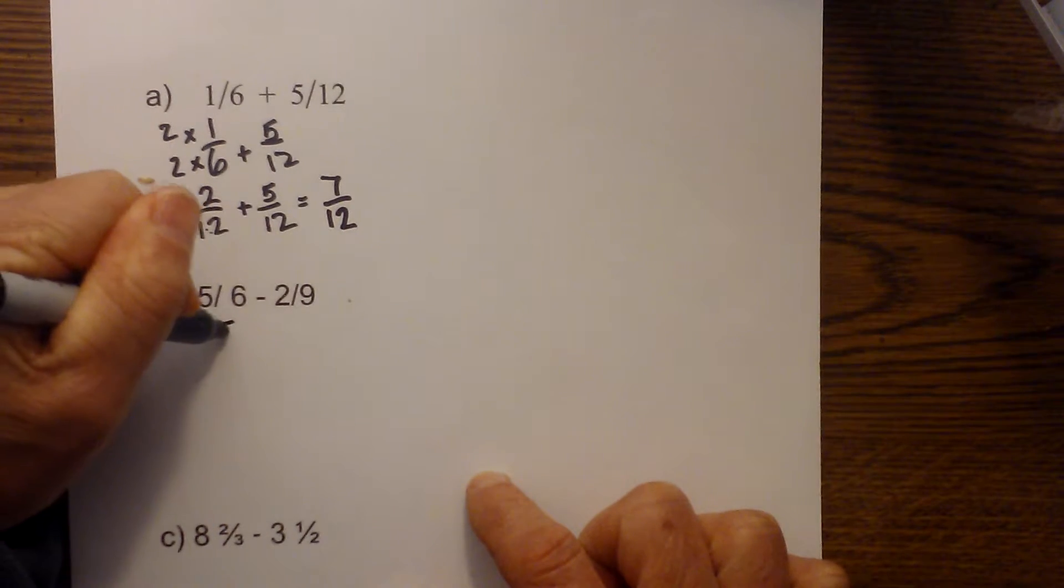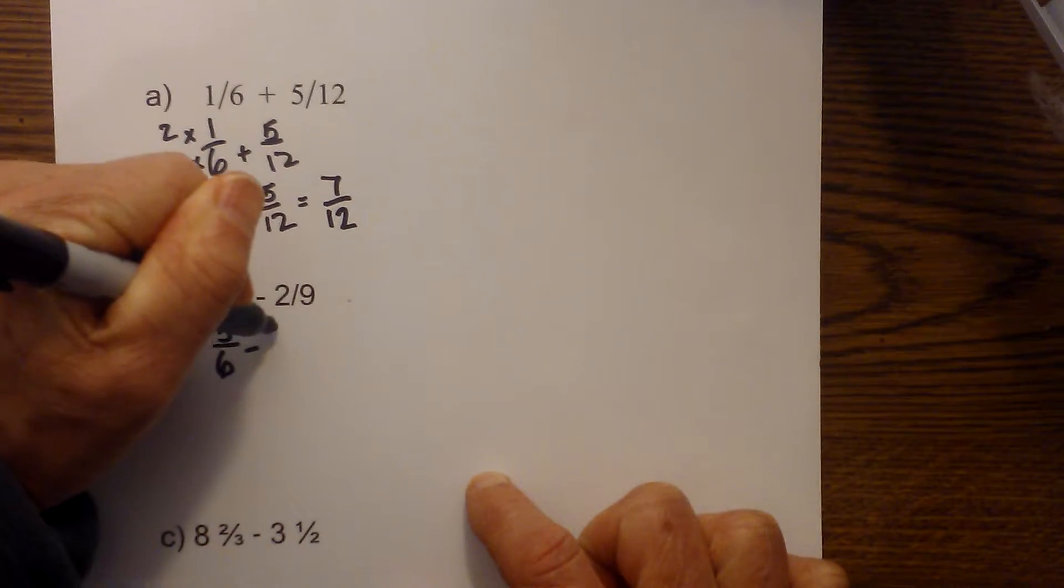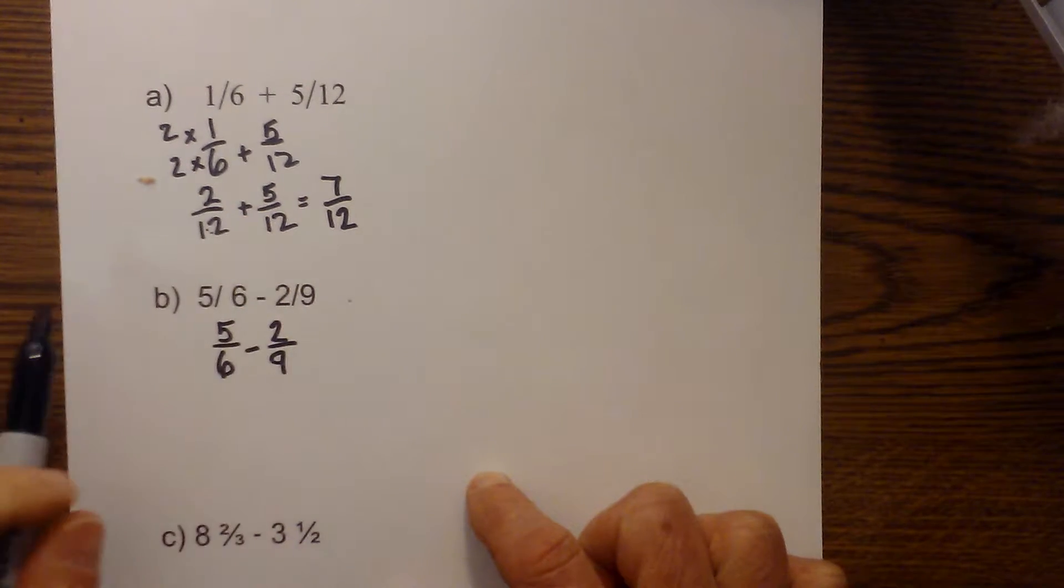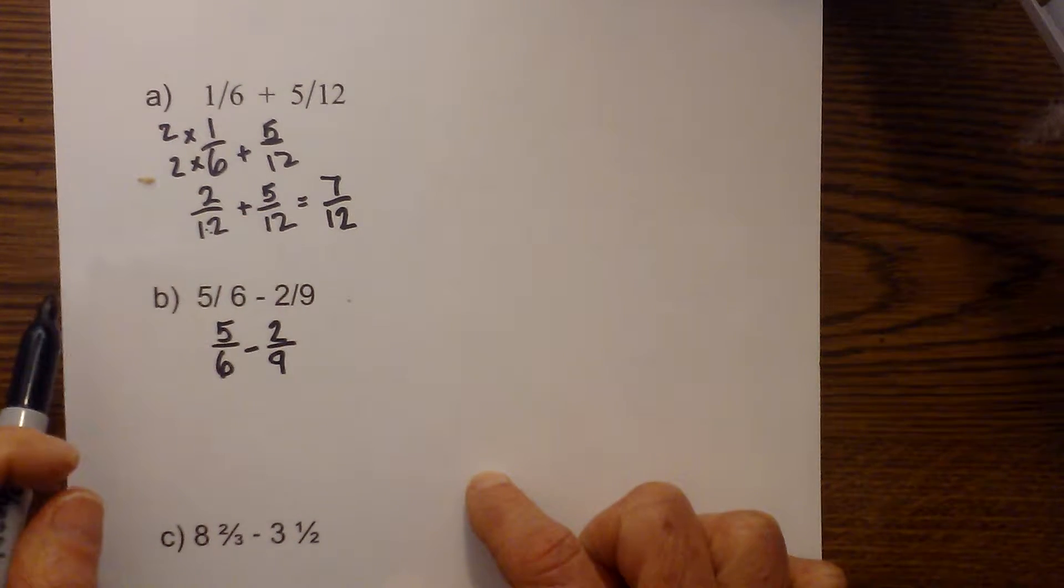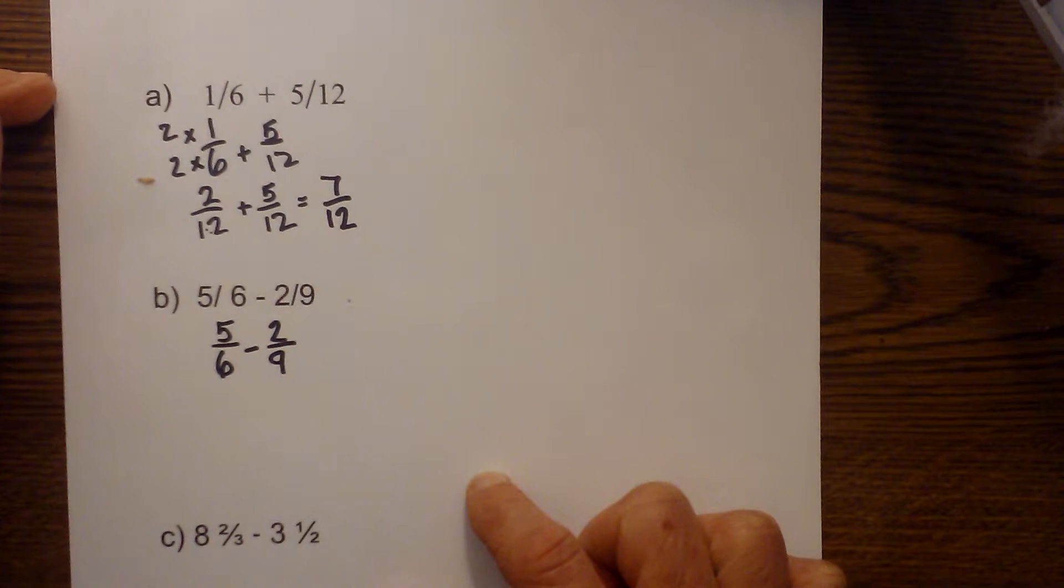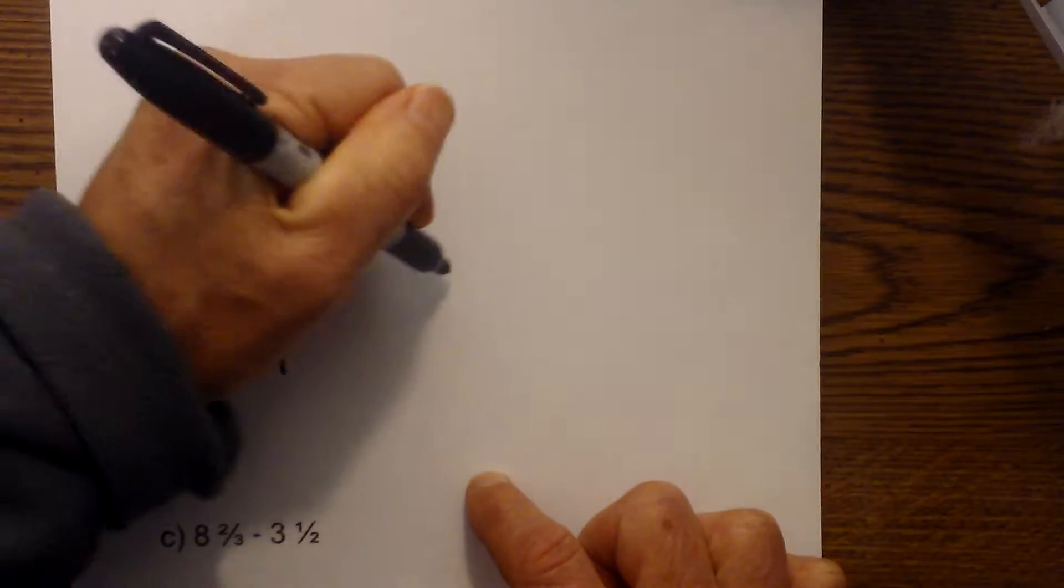Let's work the next one. We have five sixths minus two ninths. I do not have a common denominator. Now there's one technique you can use if you have trouble finding a common denominator. It's called the ladder method. And I'll leave a link below for a video that explains this.